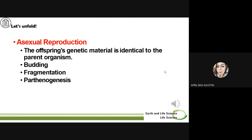The second type of reproduction is asexual reproduction. Asexual reproduction is a type of reproduction that does not involve the fusion of gametes or change in the number of chromosomes. The offspring's genetic material is identical to the parent organism. Examples of asexual reproduction include budding, fragmentation, and parthenogenesis.